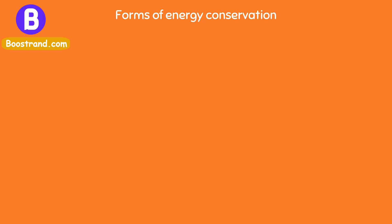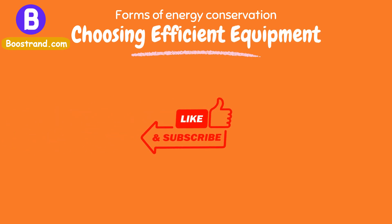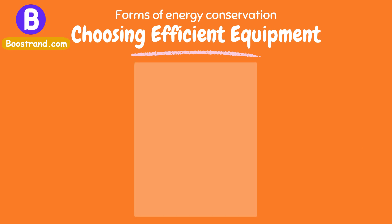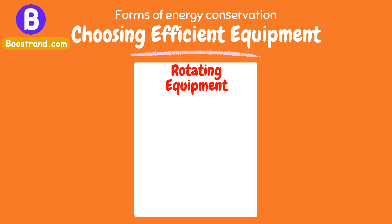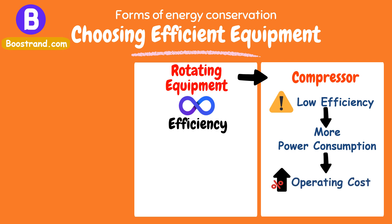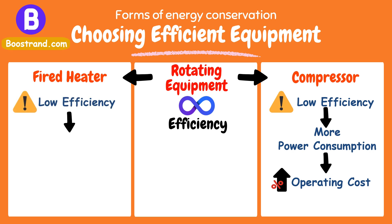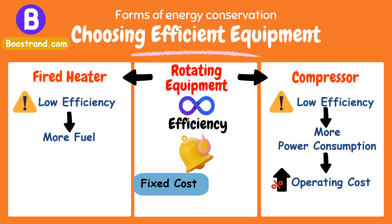The fourth way is choosing efficient equipment, meaning choosing pieces of equipment that shall ensure the lowest power consumption. For example, when we talk about rotating equipment, this is commonly reflected in their efficiency. A compressor with a low efficiency would lead to more power consumption, which would mean more operating cost. A fired heater with a low efficiency would need more fuel to achieve the required duty. So when selecting equipment, it is not just a matter of choosing the minimum fixed cost — this should be optimized with the expected operating cost which shall continue on the long run.